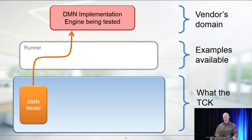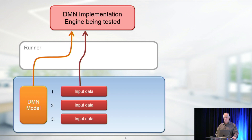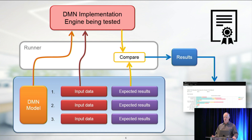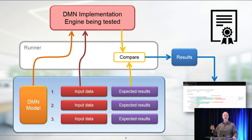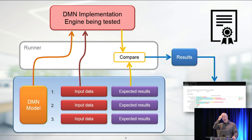The TCK provides DMN models and sets of input data. If you've got this input data, you should have these expected results. The runner submits the input data to the model, gets the result, compares the results with the expected results, and then the result of the test is written out as a CSV file. That CSV file can then be given back to the TCK and it becomes part of our website. This is actually not hard to implement - a number of vendors have done so.